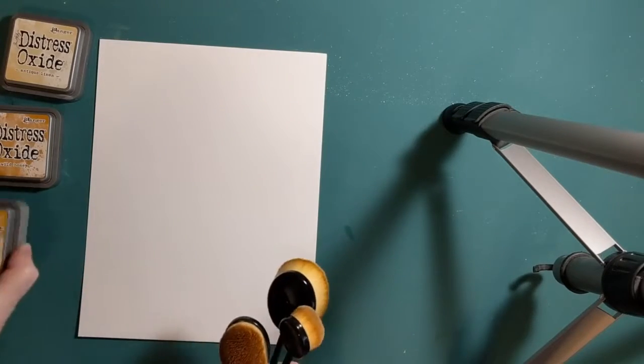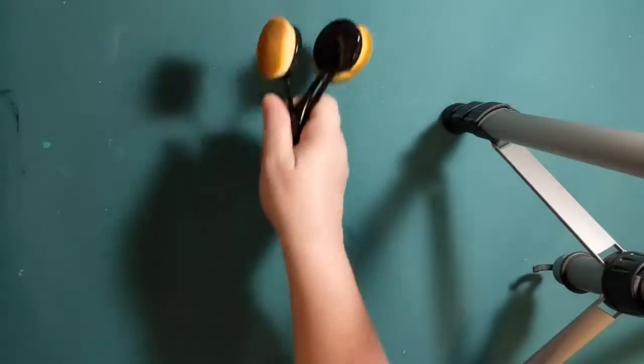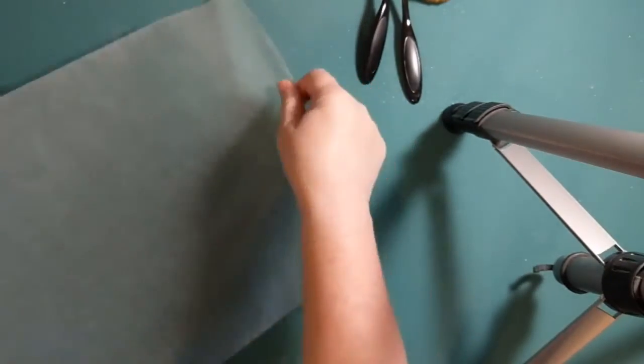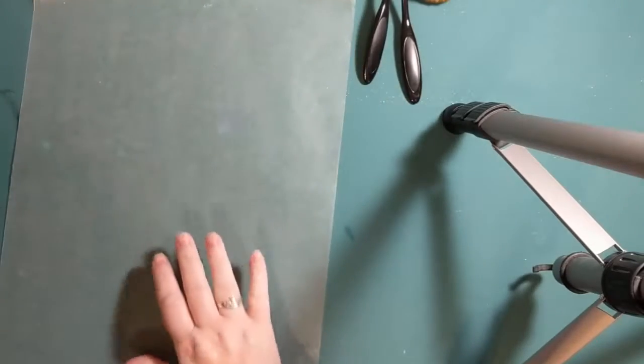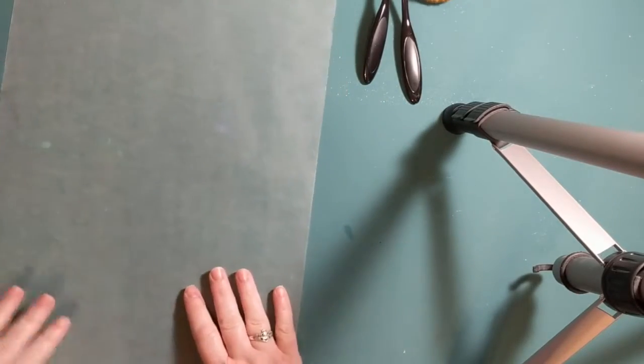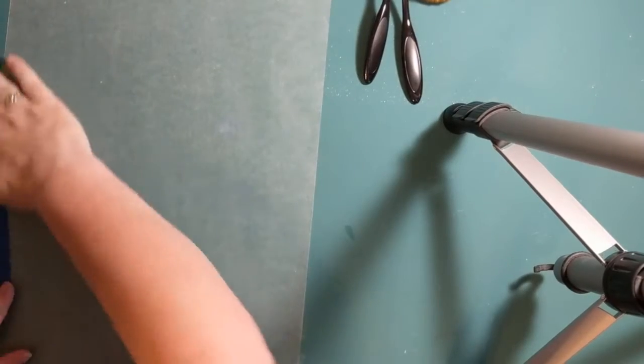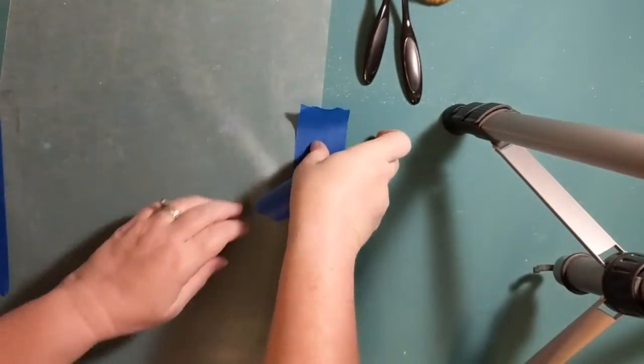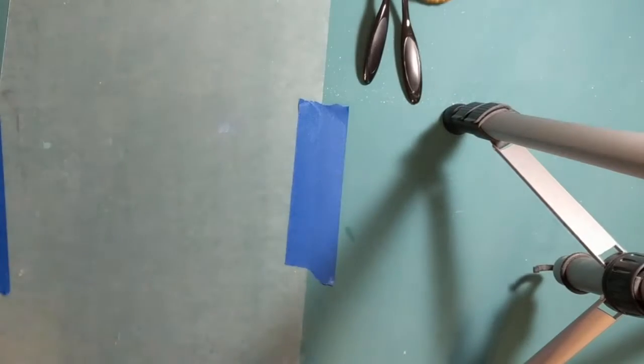So the first thing I'm going to do is I'm going to cover my tabletop with a little bit of wax paper. This will keep it a little bit neater. As you can see, I've already got ink all over this, so having a little bit, trying to prevent not having so much is great. So I just put it down with a little bit of painter's tape. Nothing too spectacular, just to keep my work table a little bit cleaner.